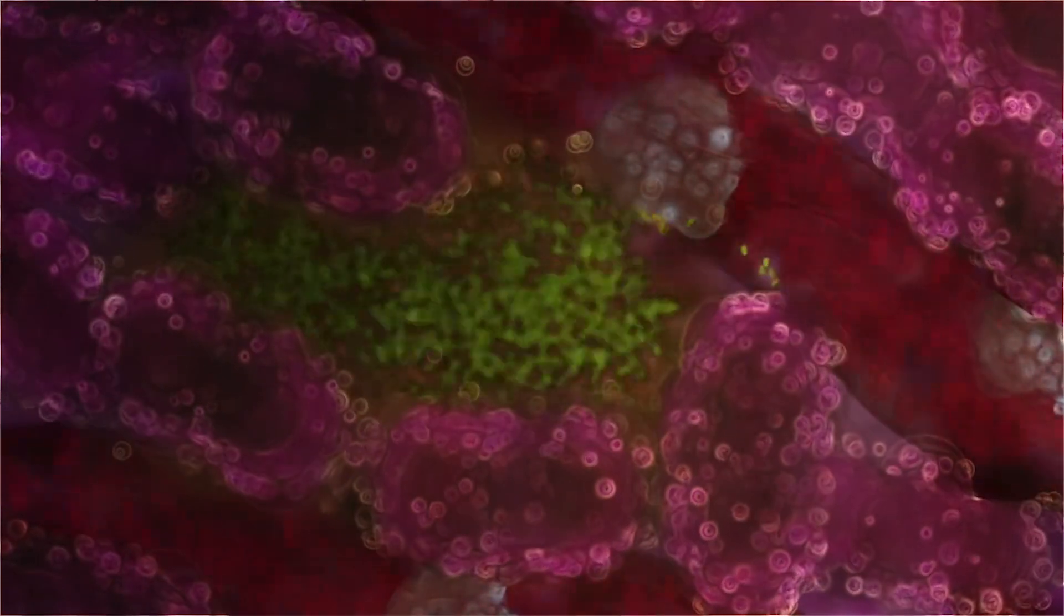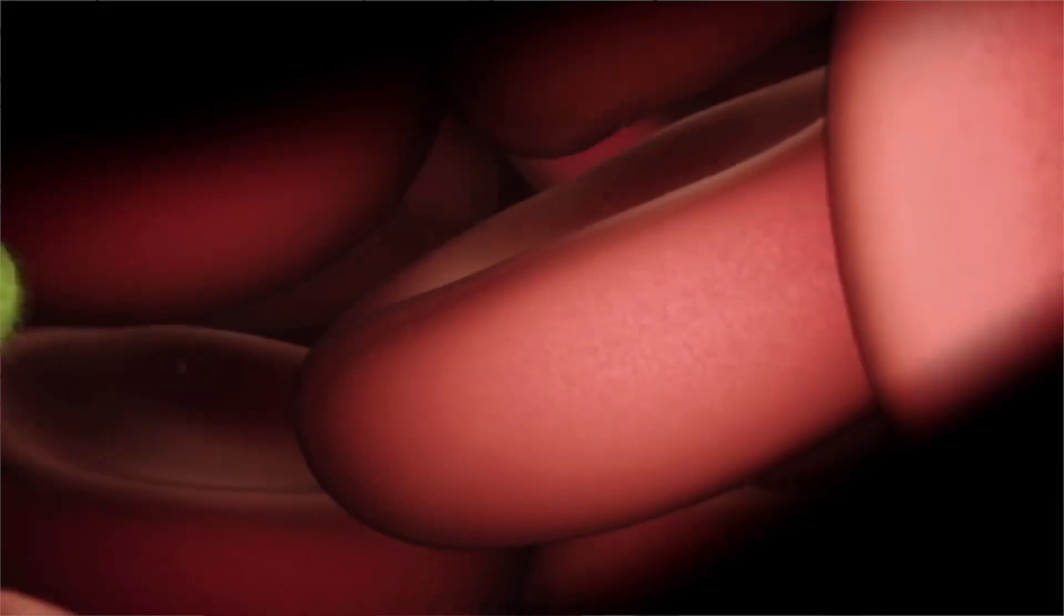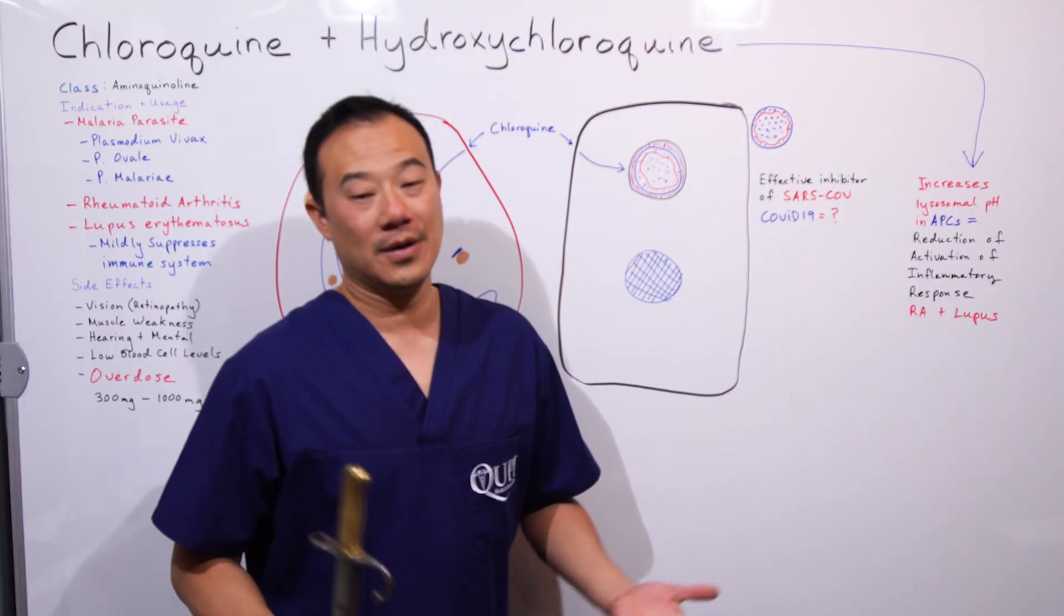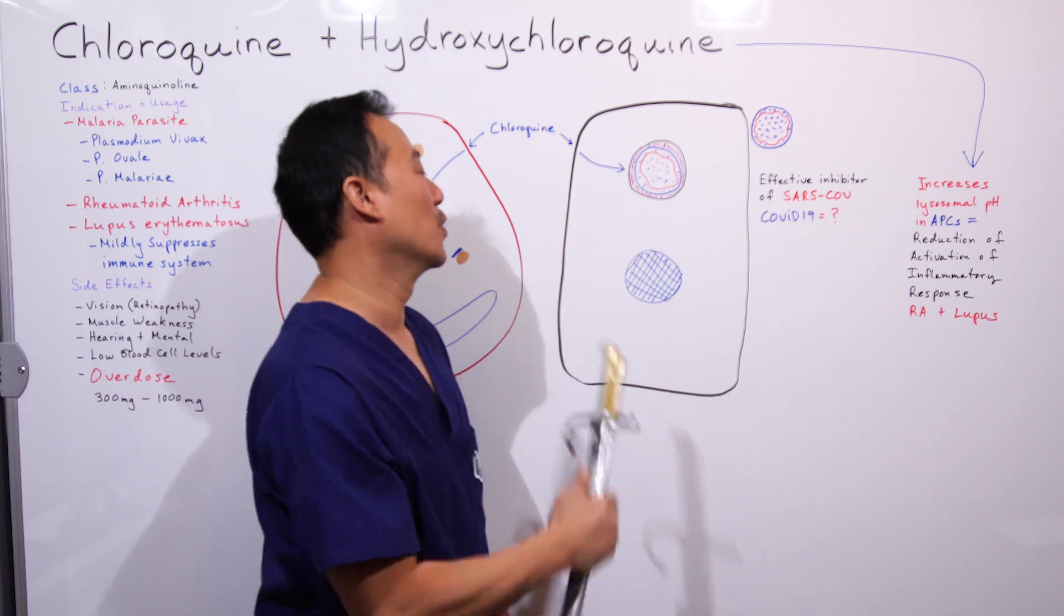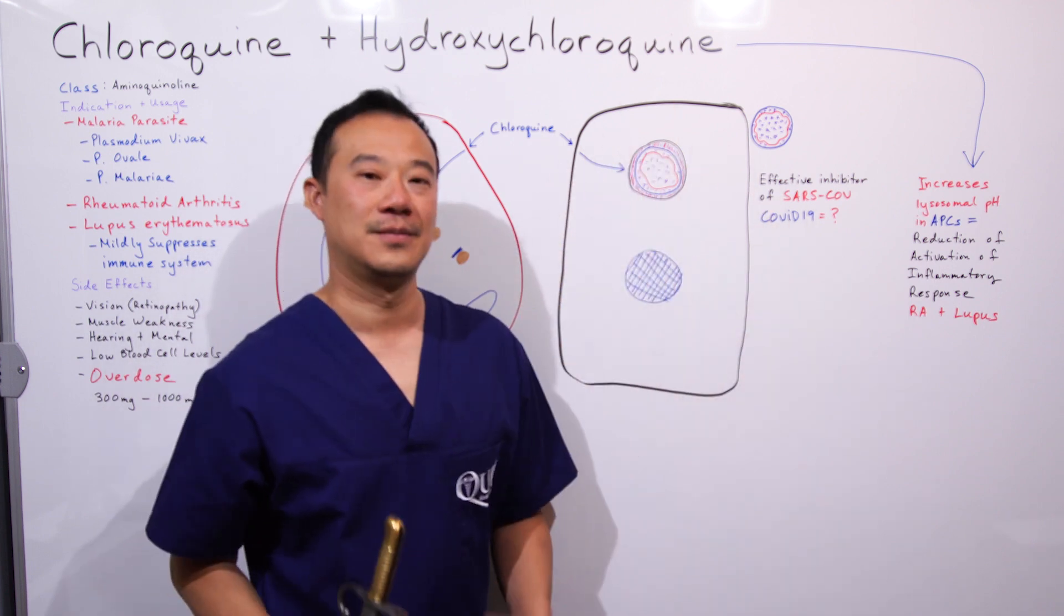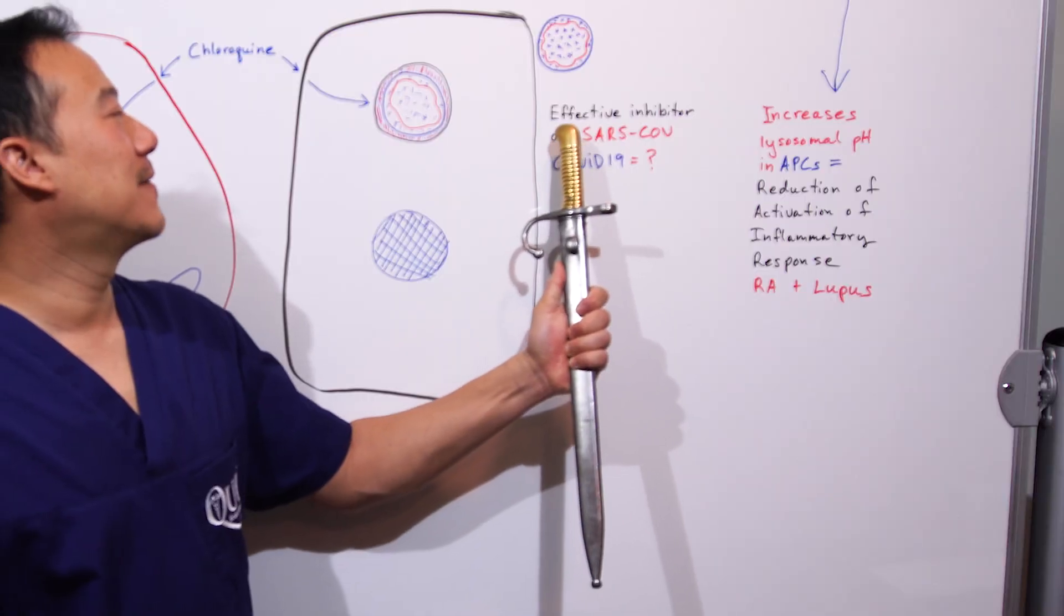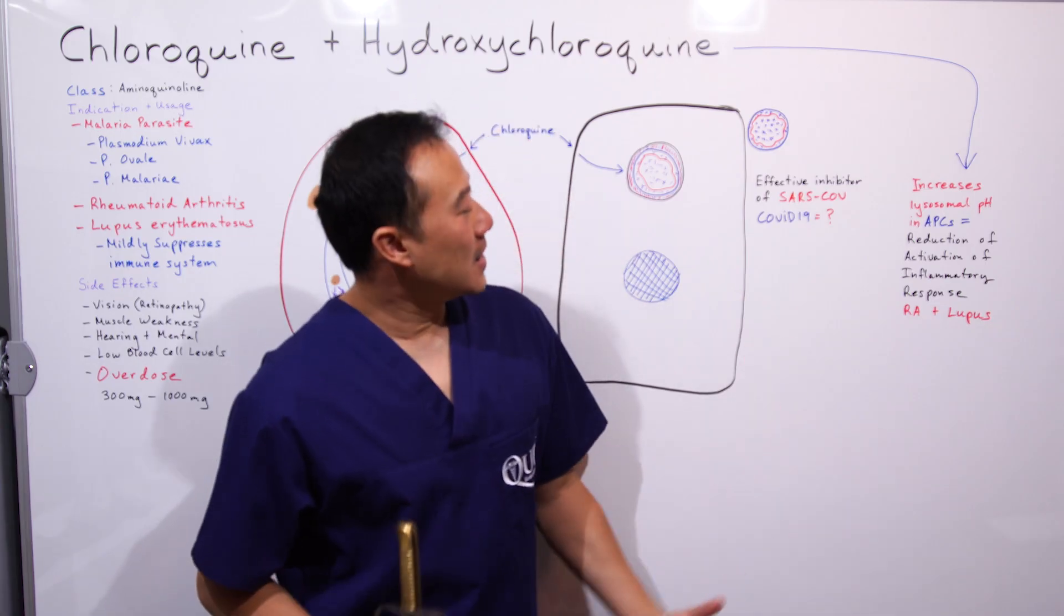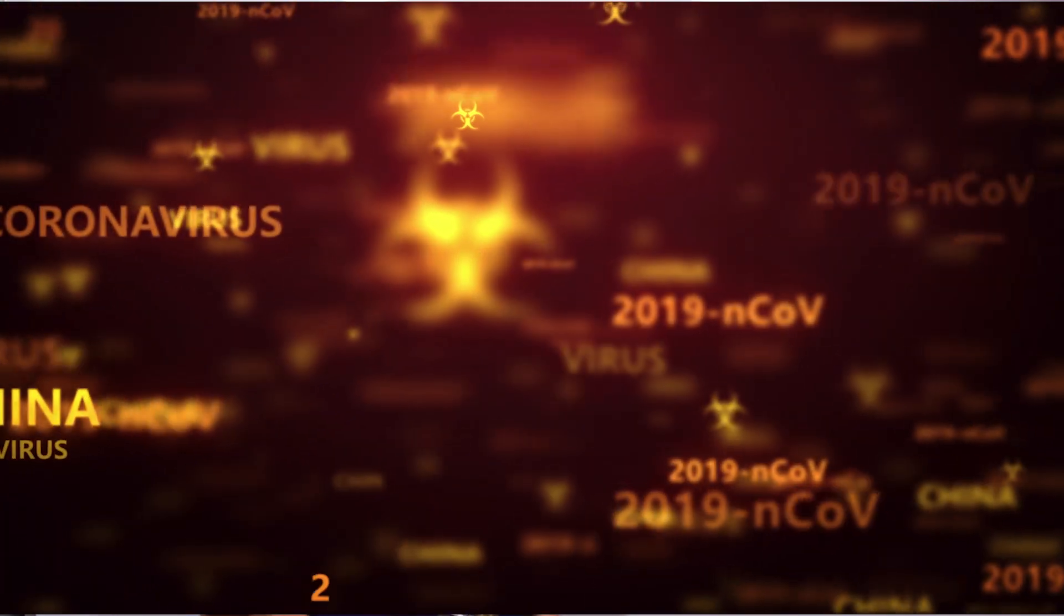It kind of gets trapped and stuck in here. The endosome is like the Uber that never unlocks the doors, and the passenger—the virus—is stuck inside and cannot be released. If it cannot be released, it cannot replicate, so it cannot infect the body. That's how chloroquine works inside the host cell preventing infection. It's basically an effective inhibitor of SARS-CoV. As far as COVID-19, we're still doing research.